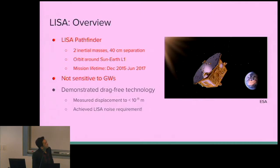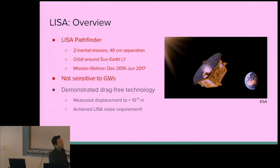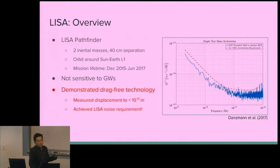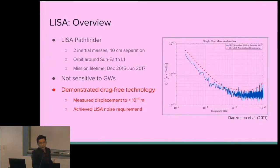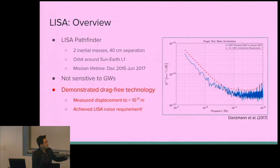The proof-of-technology mission LISA Pathfinder concluded in 2017 after operating for about one and a half years, and it was a resounding success. LISA Pathfinder consists of two inertial masses separated by just 40 centimeters, placed in the same spacecraft near the Earth-Sun L1 Lagrange point. Because of the short separation between the masses, it was not sensitive to gravitational waves, but it demonstrated that the drag-free technology required for LISA is achievable, measuring displacement between test masses to within 0.01 nanometers — actually meeting the full LISA mission requirements already.